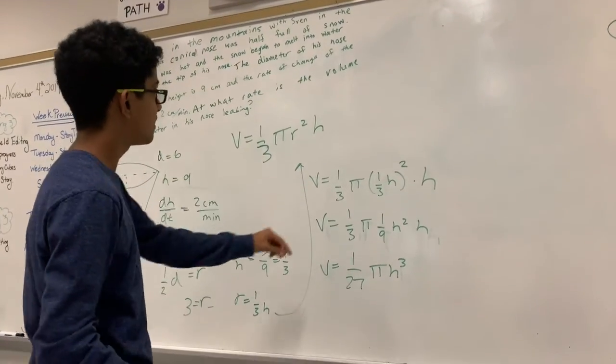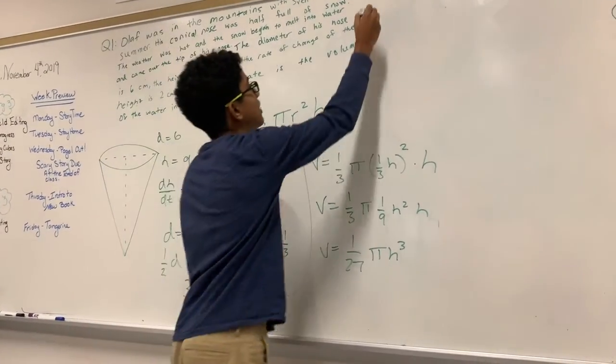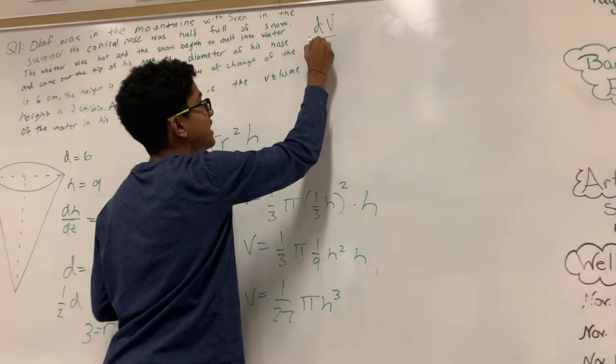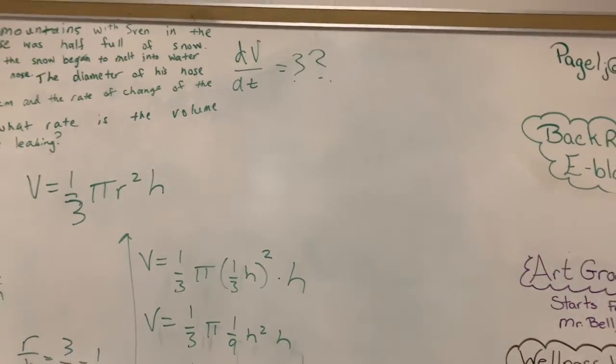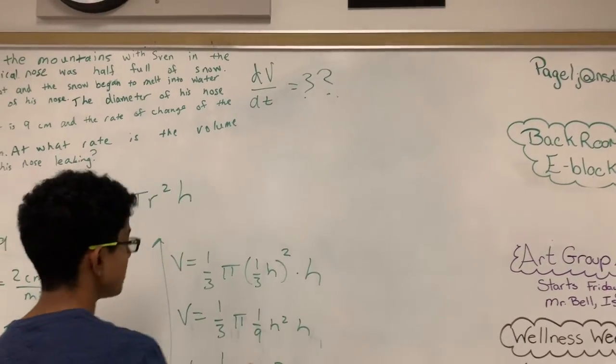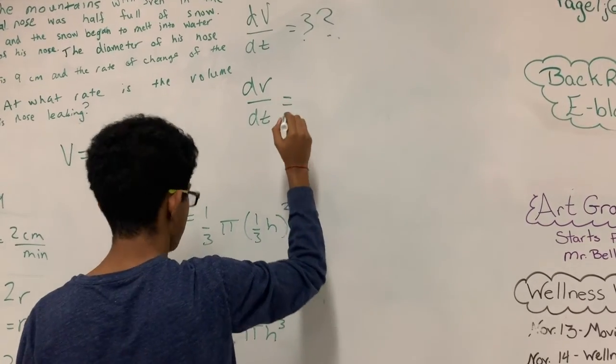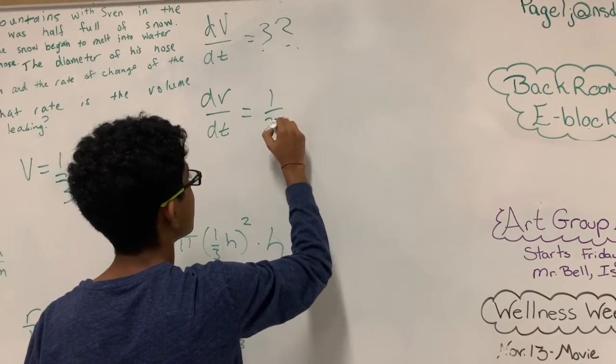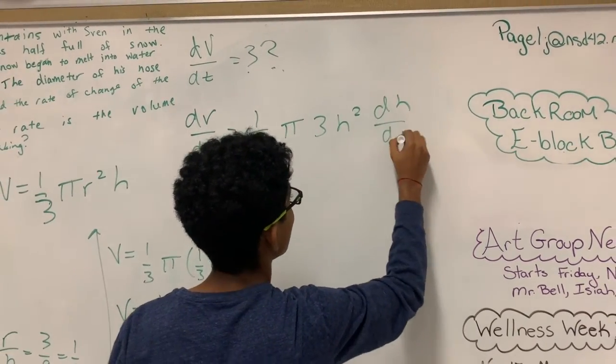So we need to find the derivative, which is asking for rate of volume. Rate means derivative. So dv over dt, we do not know, that's what the question is asking. So now we do derivative of this. So we get dv over dt equal to 1 over 27 pi, 3 h squared, dh dt.